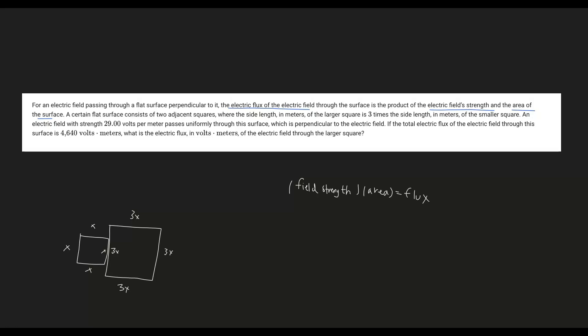An electric field with a strength of 29 volts per meter passes uniformly through the surface, which is perpendicular to the electric field. If the total electric flux of the electric field through the surface is 4640 volts times meters, what is the electric flux in volts times meters of the electric field through just the larger square? That's a lot of information, but essentially it boils down to electric field times area equals the flux.